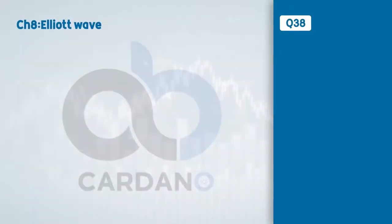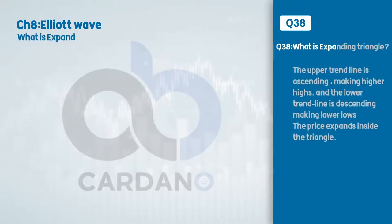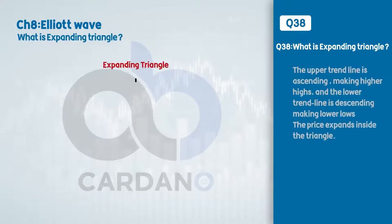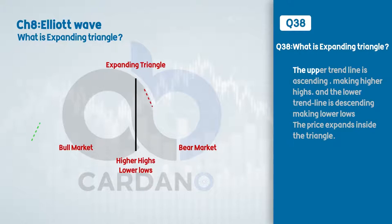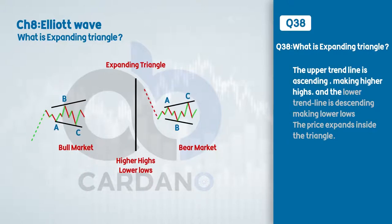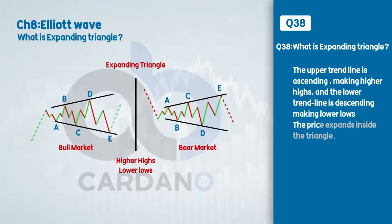Question number 38: What is an expanding triangle? The answer is, the upper trend line is ascending, making higher highs, and the lower trend line is descending, making lower lows. The price expands inside the triangle.